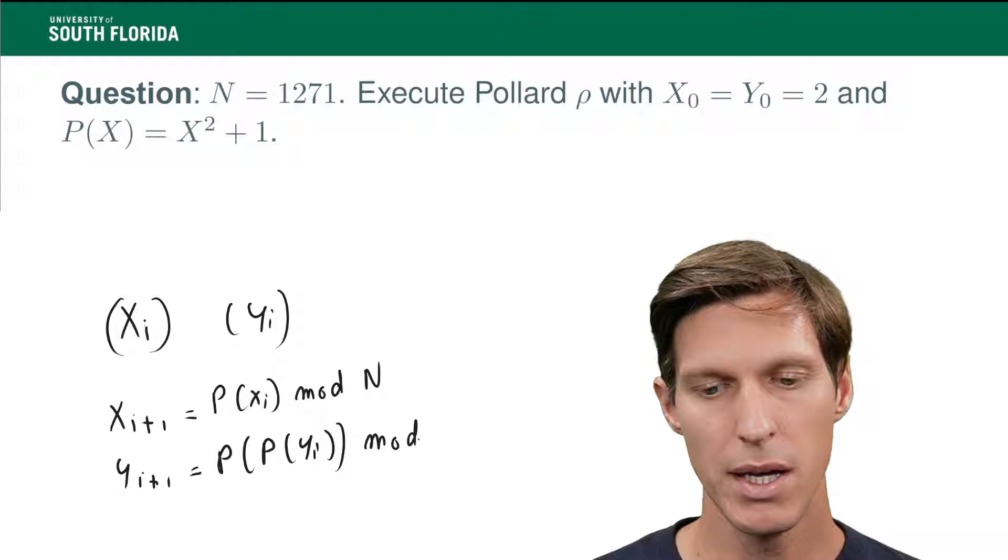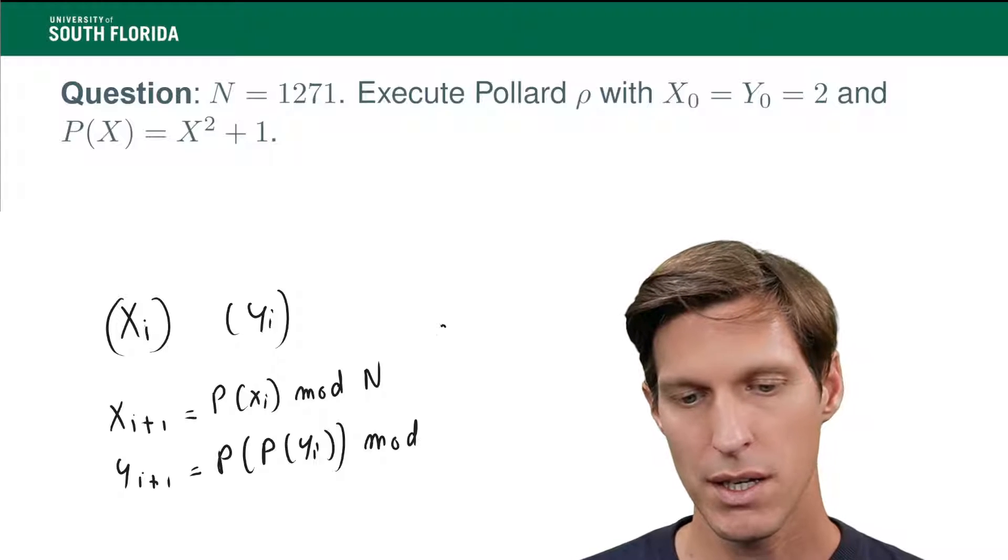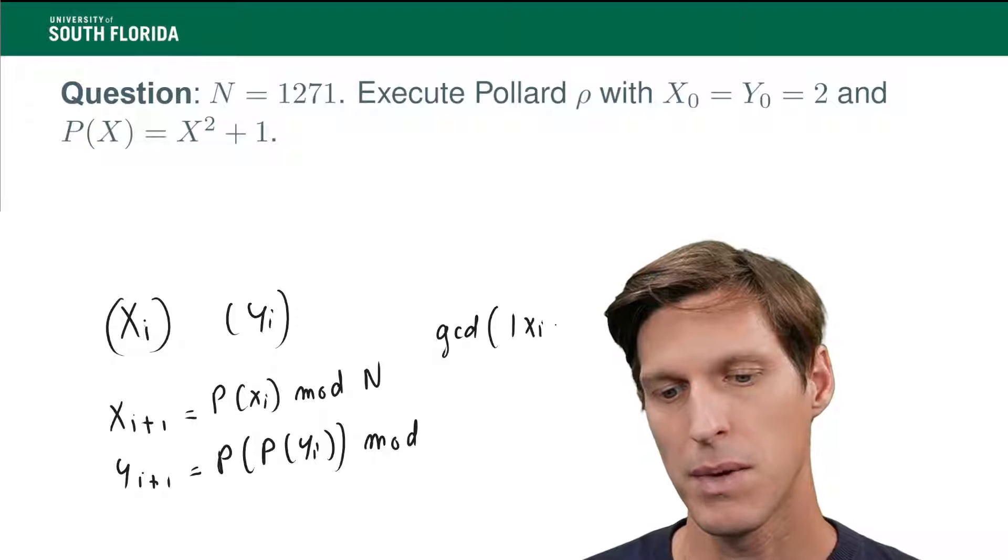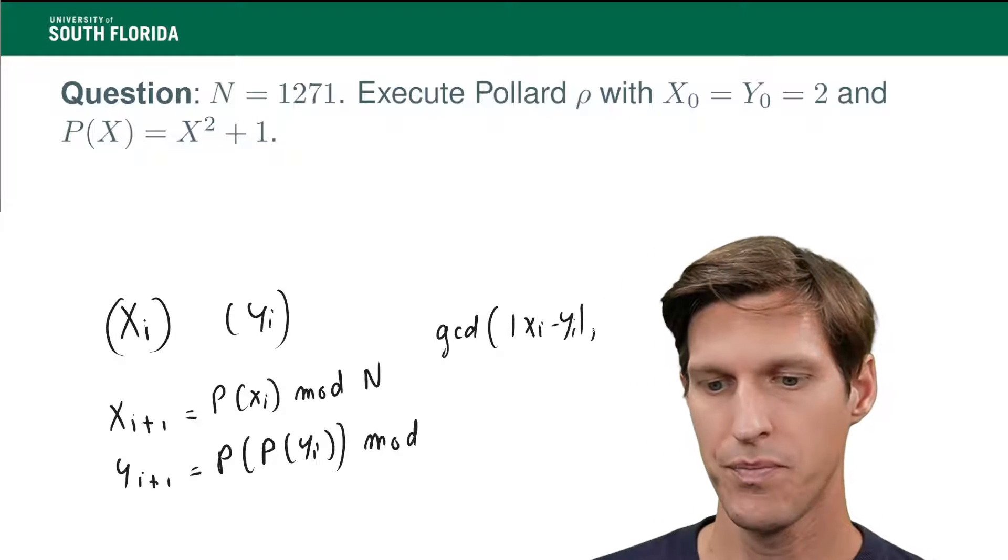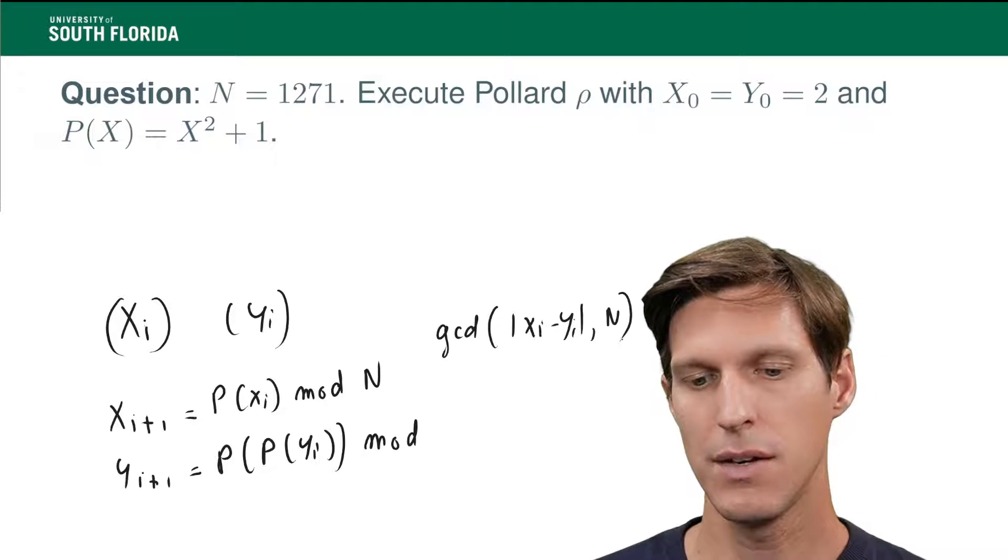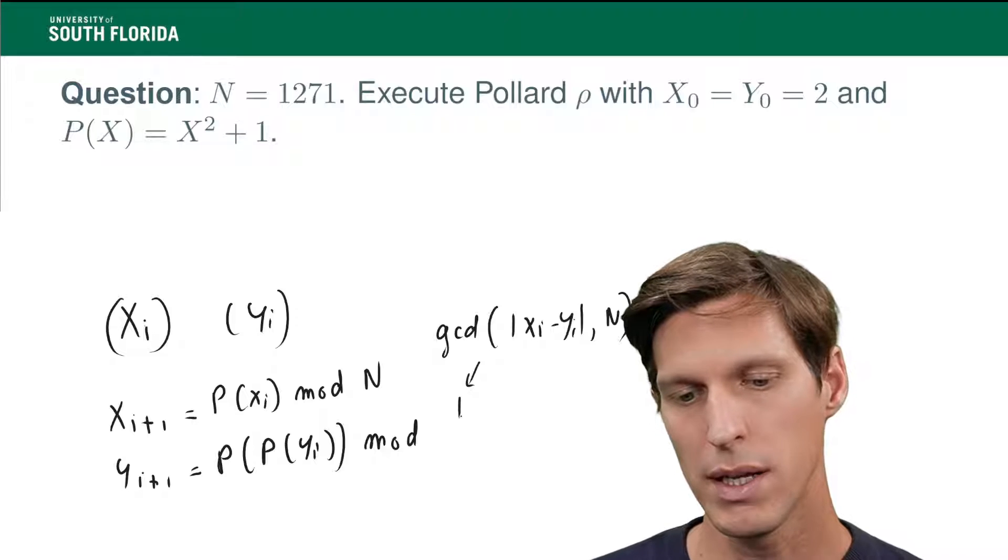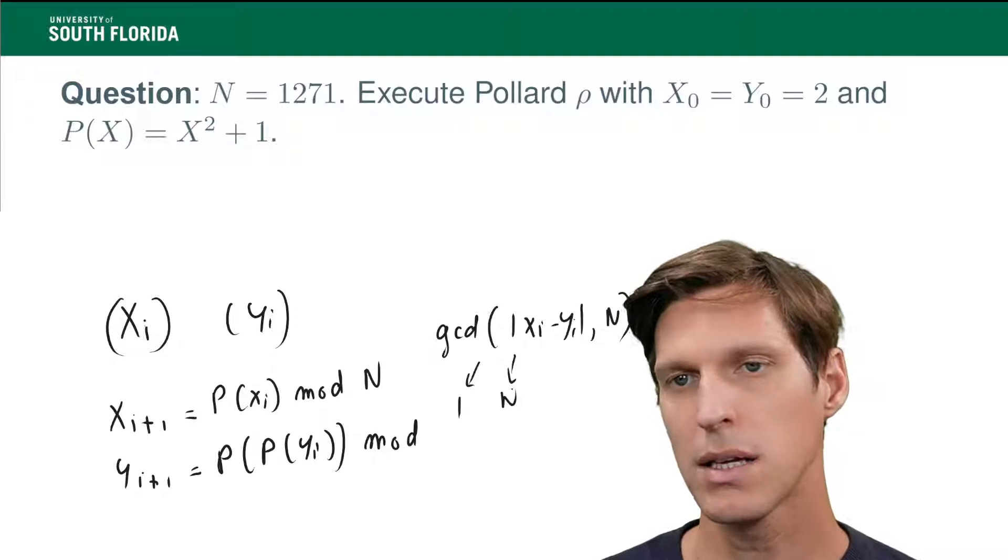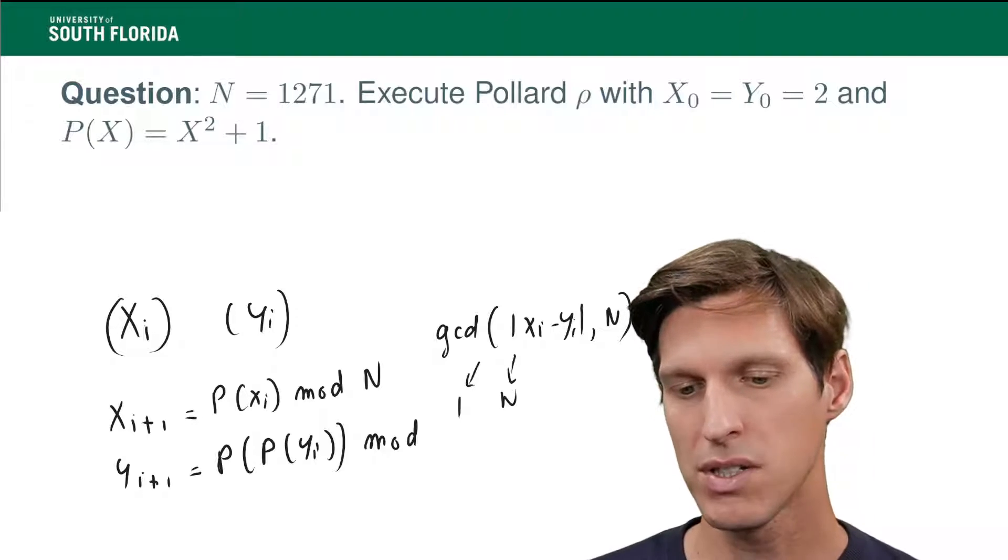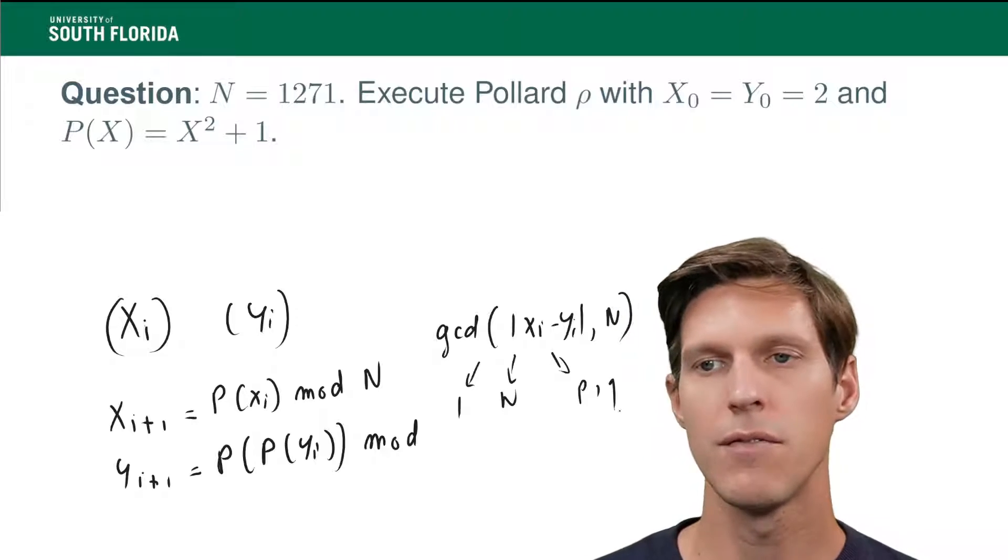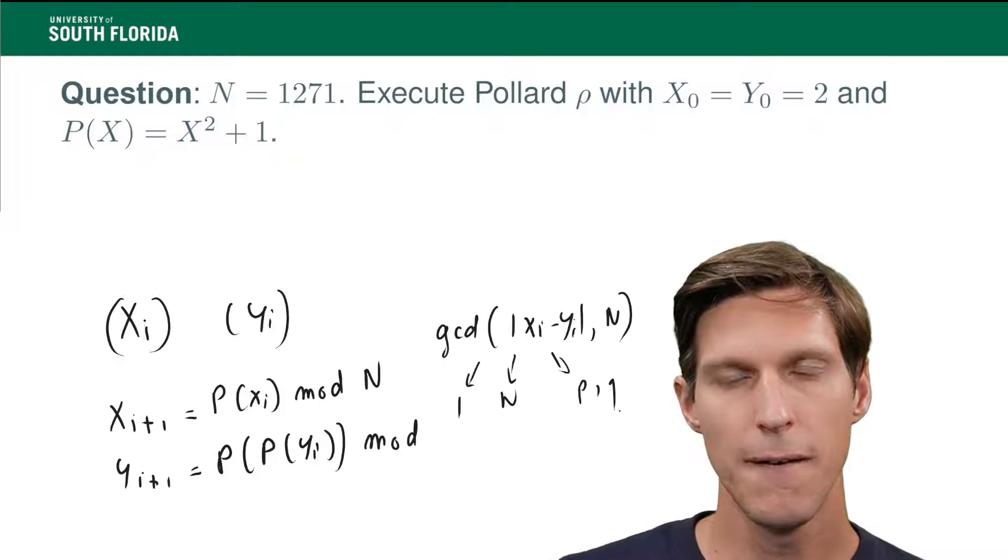And at each step of the way, we are going to check the GCD between xi minus yi and N. And if that GCD is non-trivial, so most of the time it's going to be 1 or N, which is not very interesting, but sometimes it will be either p or q. And if that's the case, then we win.